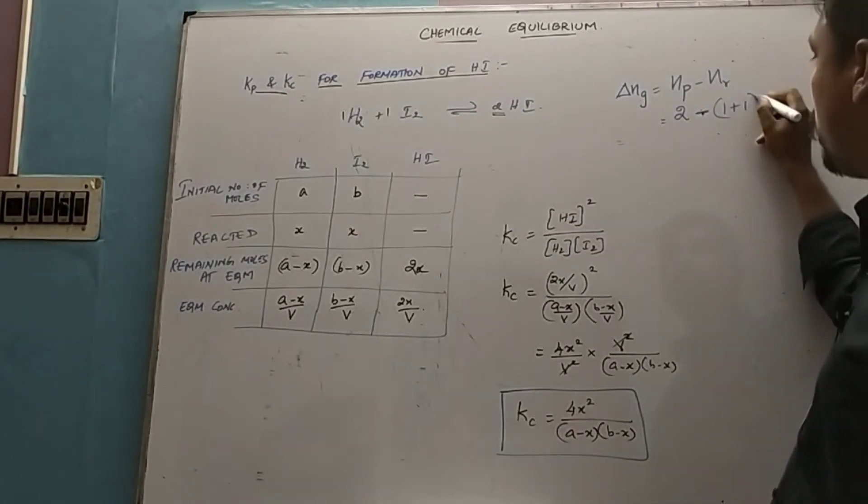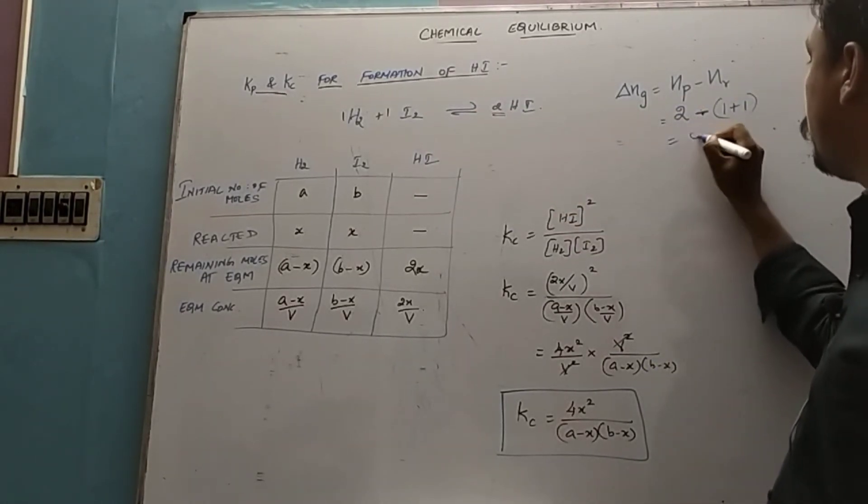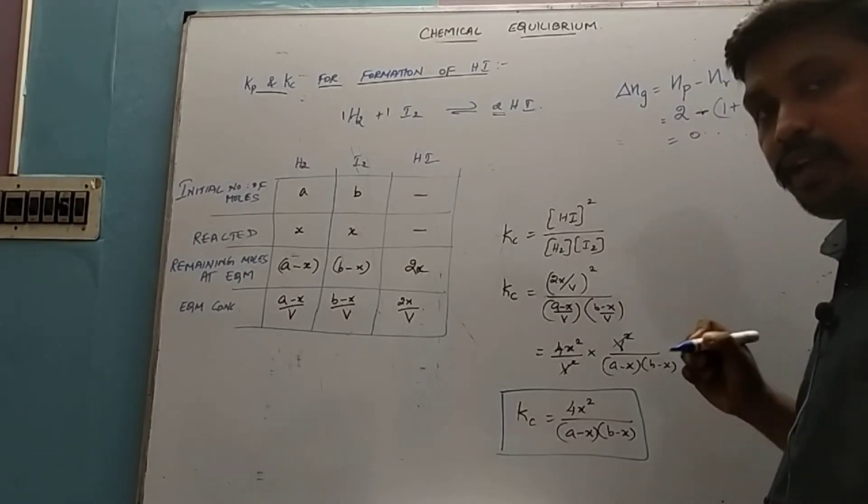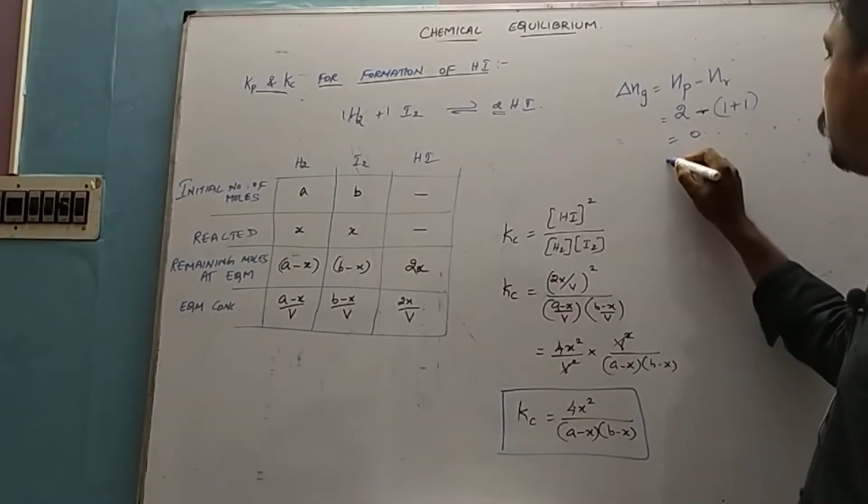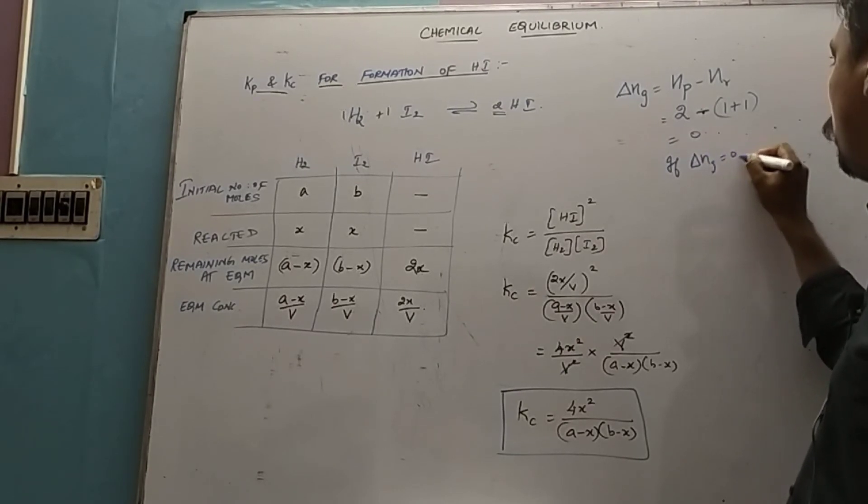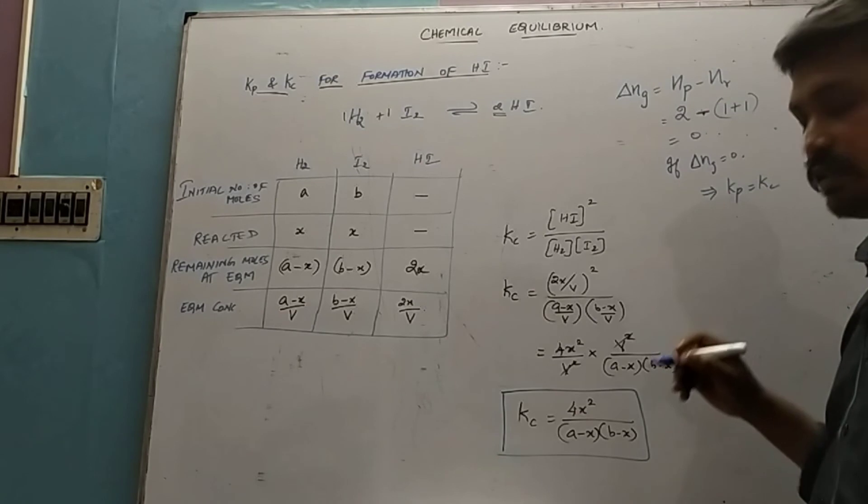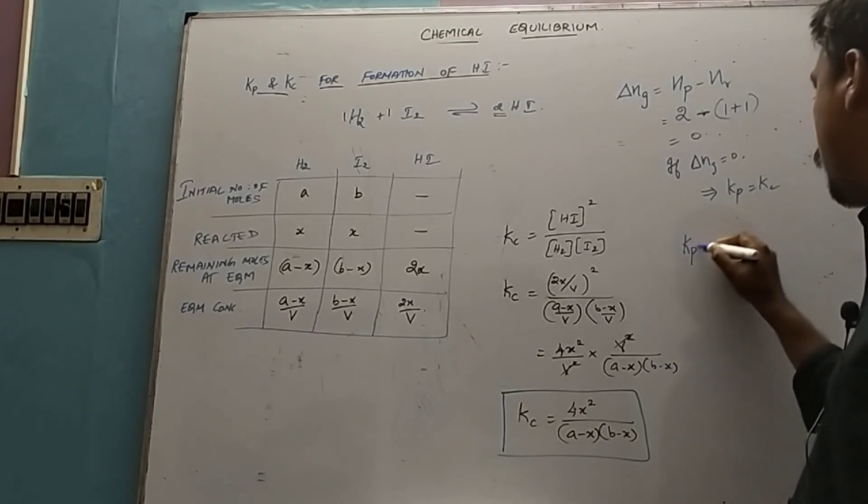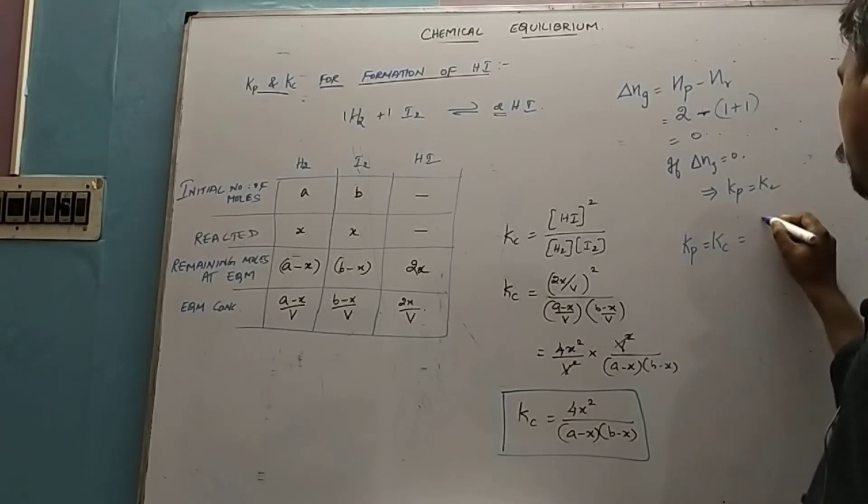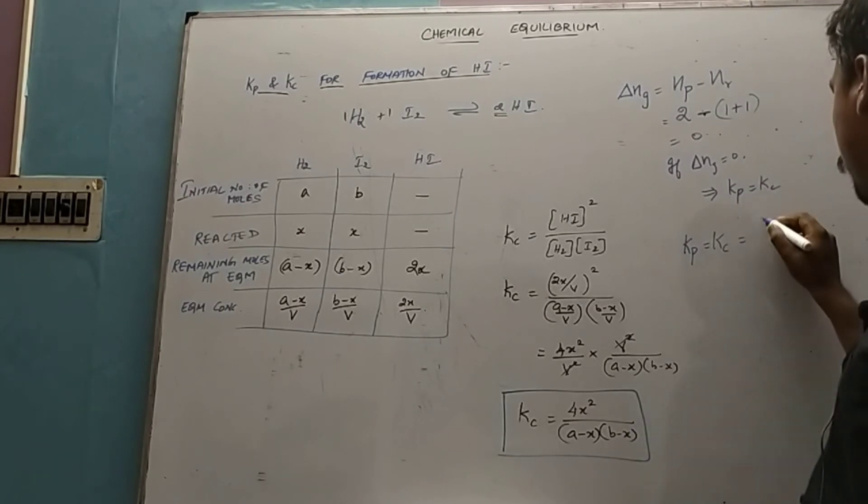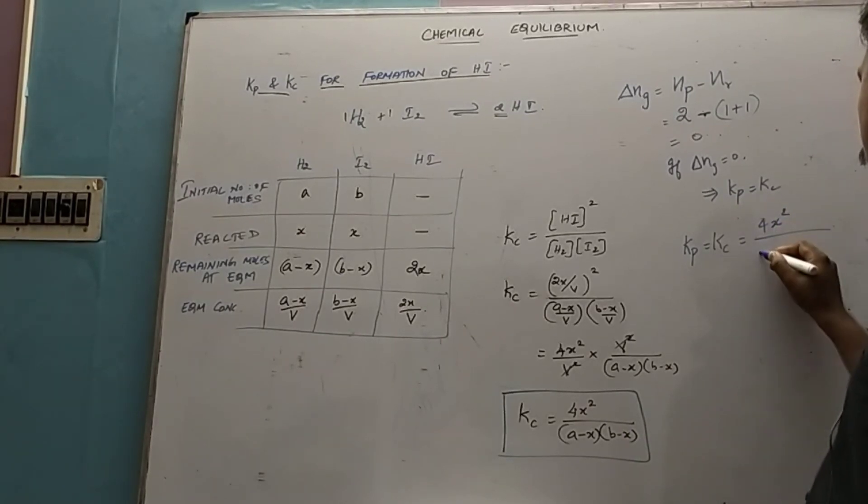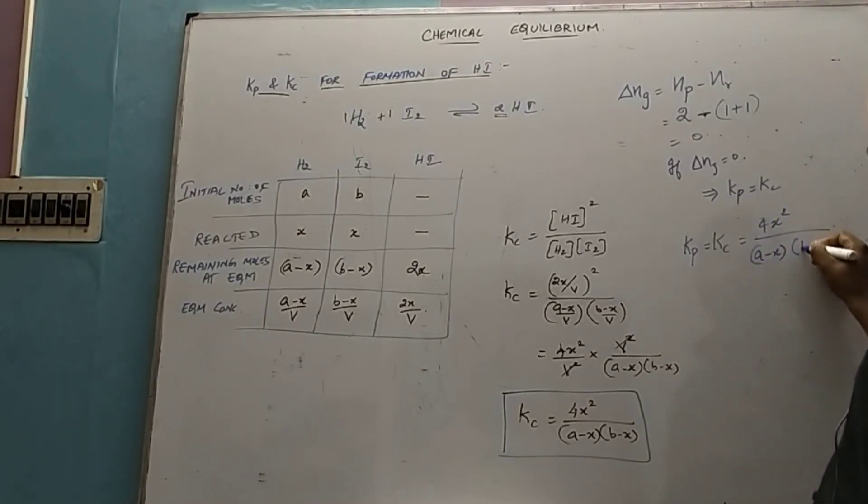We have already discussed: if Δng equals zero, which implies Kp equals Kc. Therefore for this reaction, Kp equals Kc equals this same value: 4x² divided by (a minus x)(b minus x).